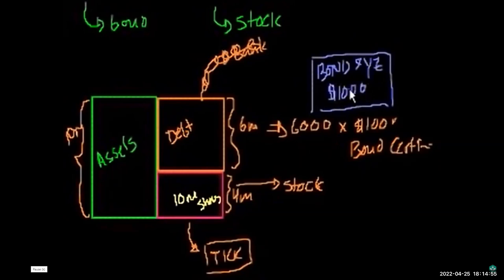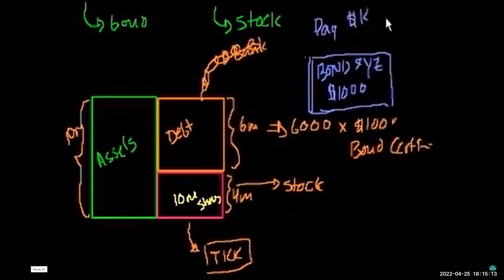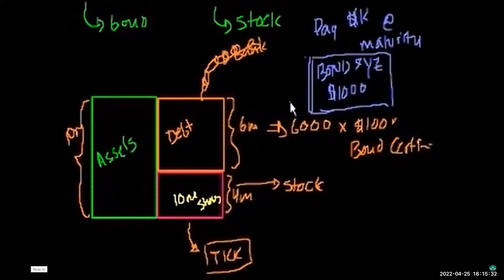A bond certificate has a face value — also called par value or stated value. It might say: 'Bond from Company XYZ, face value $1,000.' This is essentially an IOU from Company XYZ. If I held one, that tells me Company XYZ is going to pay me $1,000 at some future date — at maturity.